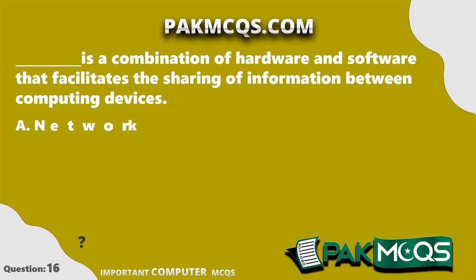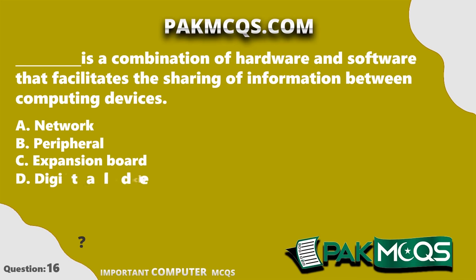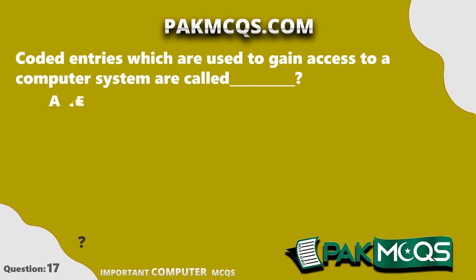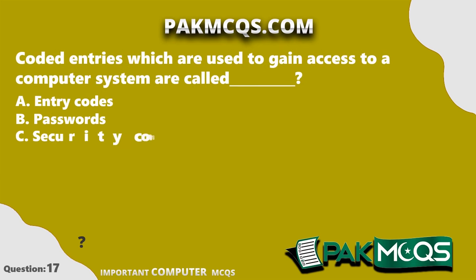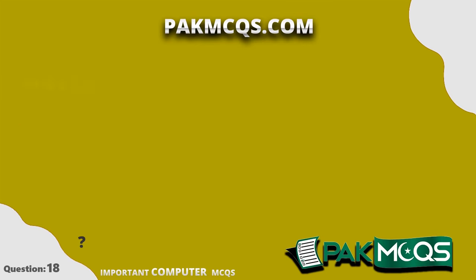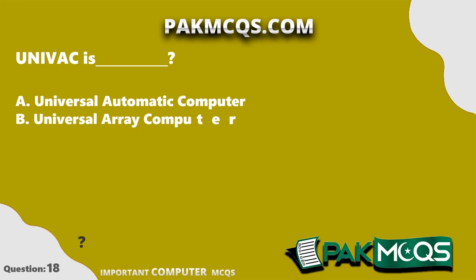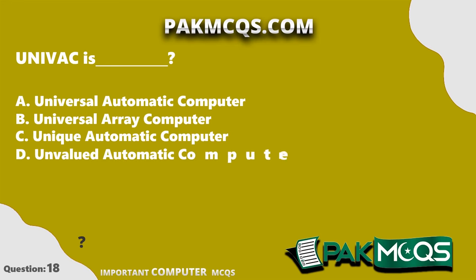A network is a combination of hardware and software that facilitates the sharing of information between computing devices. Coded entries which are used to gain access to a computer system are called passwords. UNIVAC stands for Universal Automatic Computer.